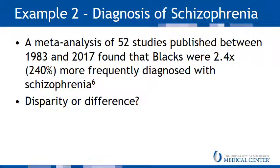Here is a second example: the diagnosis of schizophrenia. A meta-analysis is an analysis of a collection of studies selected based on quality criteria. In a meta-analysis of 52 studies spanning more than 34 years, the combined findings showed that African Americans or Blacks were 240 percent more likely to be diagnosed with schizophrenia than non-Blacks. The question is: what accounts for this — is it genetic, is it due to diagnostic patterns, or is it due to stress?